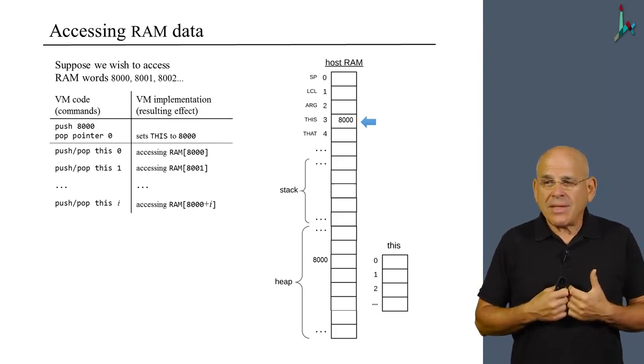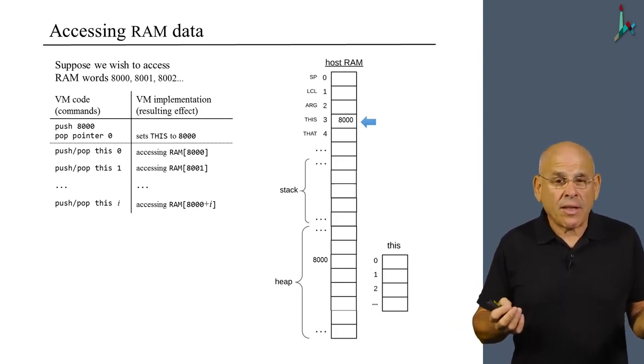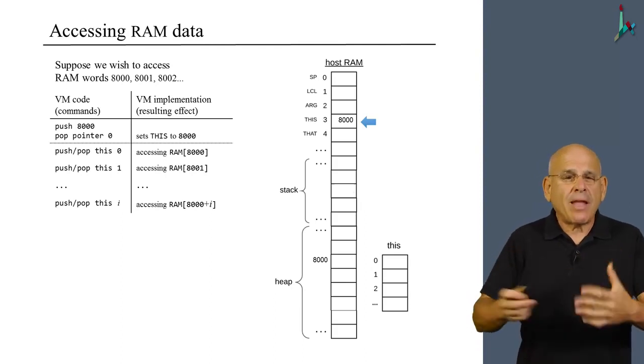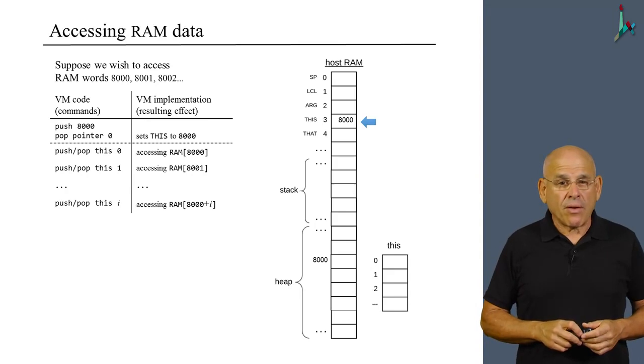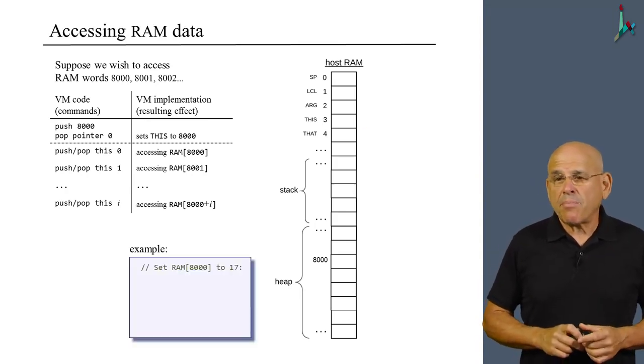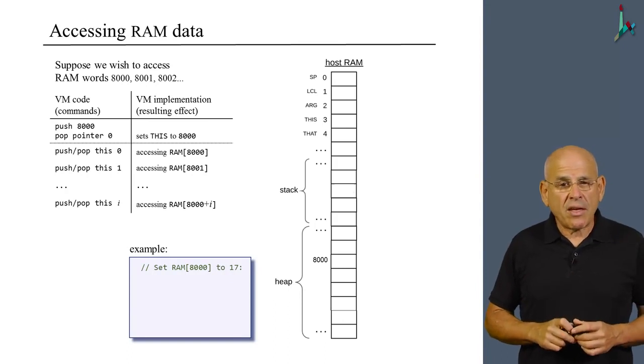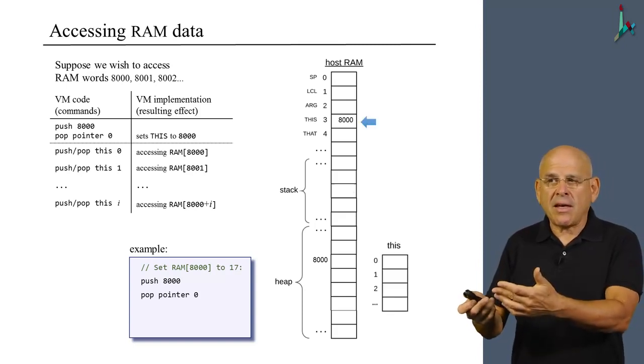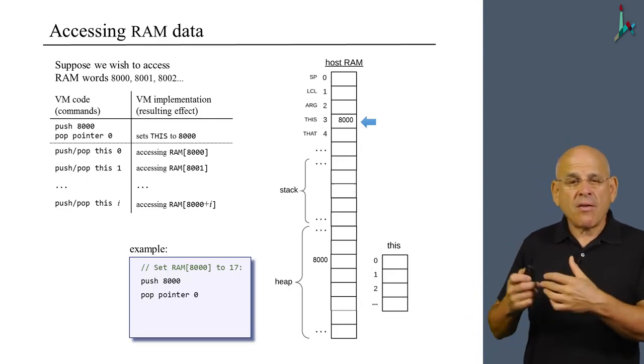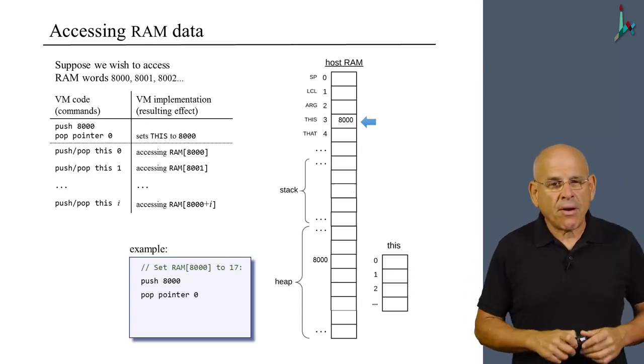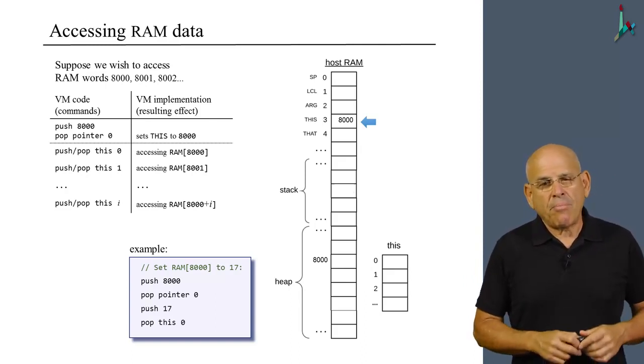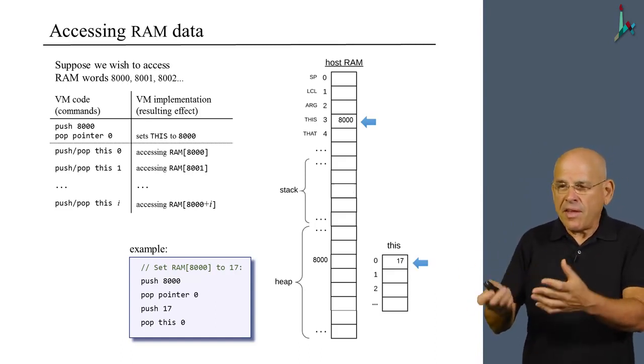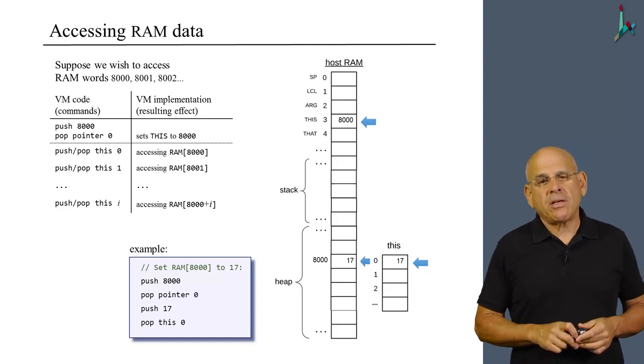Notice that the VM program doesn't know where all these segments are located on the RAM. It only works with this segment, and the VM implementation takes care of all the other details in the background. Here's a specific example. Suppose you want to set RAM 8000 to 17. How do we do it? We push 8000, pop pointer 0. By doing this, we get the desired anchor or the desired alignment. And now that this is aligned on the proper area in the RAM, we go on to do push 17 and pop this 0. This will put the number 17 virtually in the segment this, and practically it will put it in RAM location 8000.